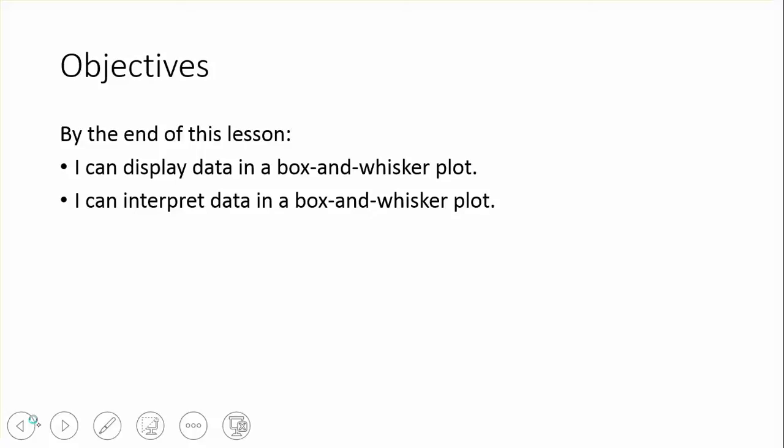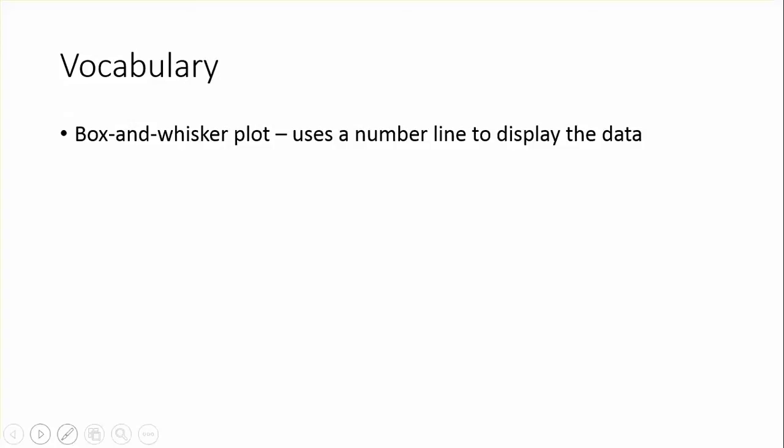We'll be able to actually display data in a box and whisker plot and then interpret data that's in a box and whisker plot. First is the definition: a box and whisker plot uses a number line to display the data. Make sure you have this vocabulary term written into your notes.